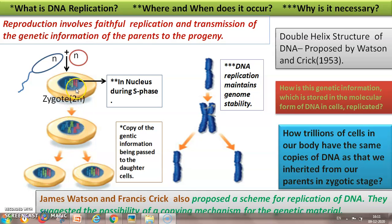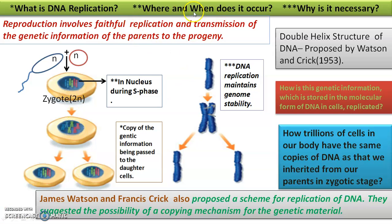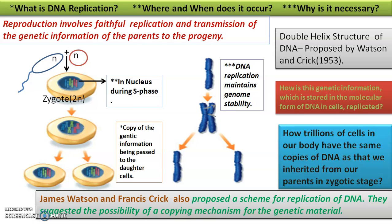The newly formed cells are called daughter cells, and the already existing cell that gives rise to new cells is called the parent cell. Replication occurs in the nucleus during the S phase of interphase of the cell cycle in eukaryotic cells. In prokaryotic cells, there is no well-defined nucleus, so it occurs in the cytoplasm. Replication is necessary to maintain genome stability — every cell in an organism should have the same number of chromosomes with the same genes.